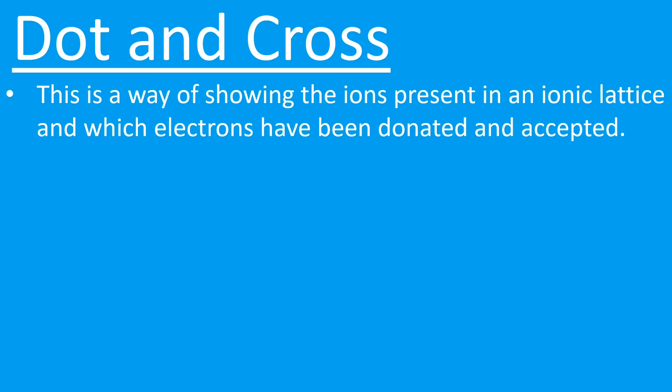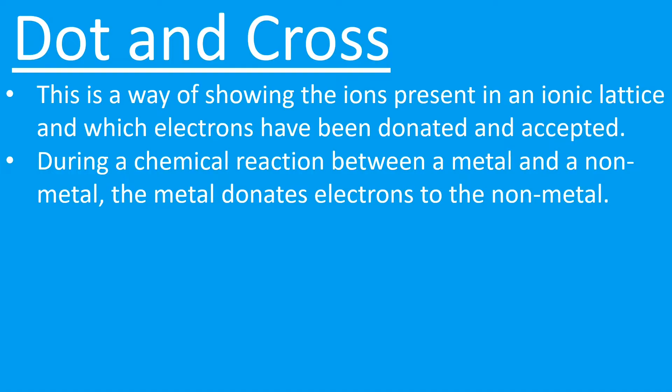So what even is a dot and cross diagram? Well, a dot and cross diagram is a way of representing and showing the ions that are present within the ionic lattice and it allows us to track which electrons have been donated and which electrons have been accepted. During a chemical reaction between a metal and a non-metal, we're going to see the metal donating the outer electrons to the non-metal.